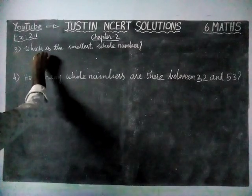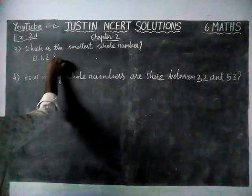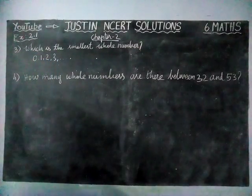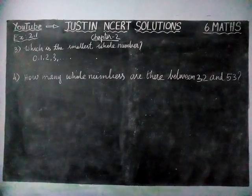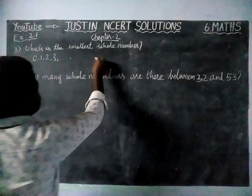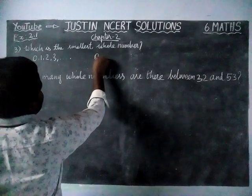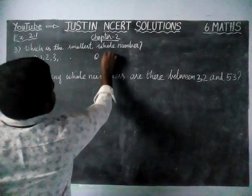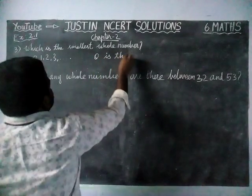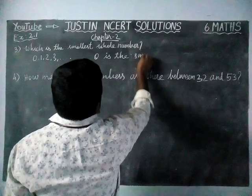The third question asks: what is the smallest whole number? In whole numbers, the starting numbers are 0, 1, 2, 3, and so on. So the smallest whole number is 0.